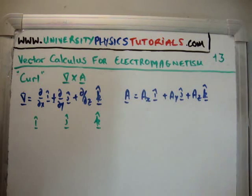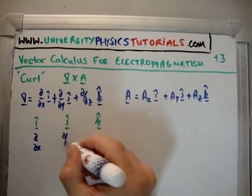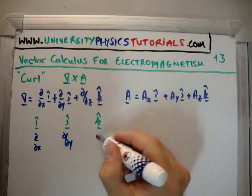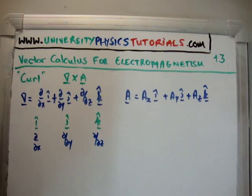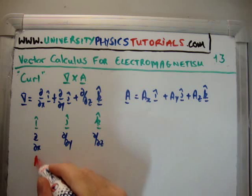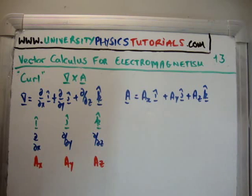So you want to take the cross product between the two of these. Note the order by the way, so this will be coming first and this will be coming second. It's very simple: we write our components down, namely in this case i hat, j hat, and k hat, then we write down our first vector.